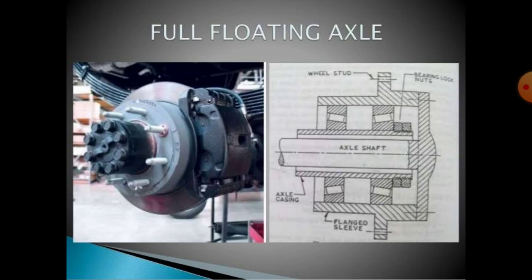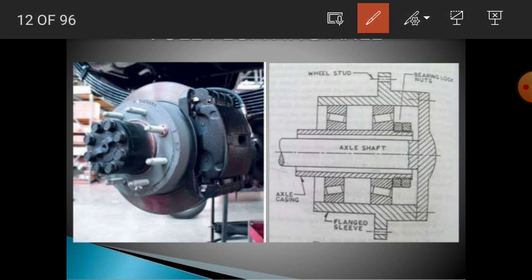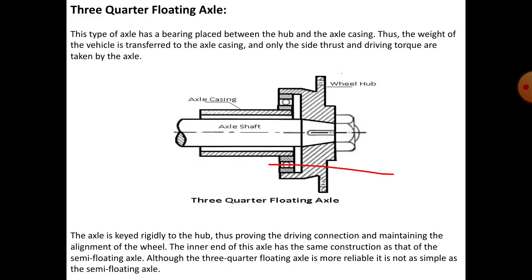Looking at the diagram of the full floating axle: the bearing is located between the axle shaft and the wheel hub. With the help of the nuts and bolts, you can remove the entire shaft from the axle casing.